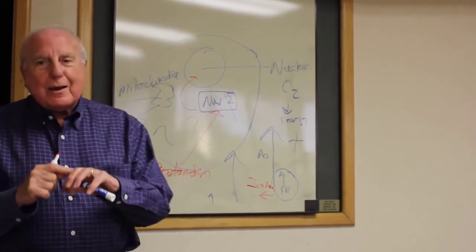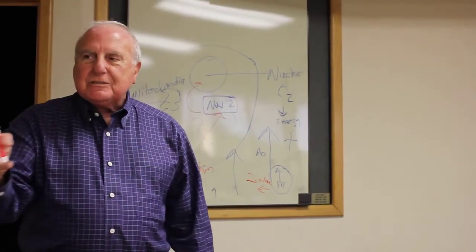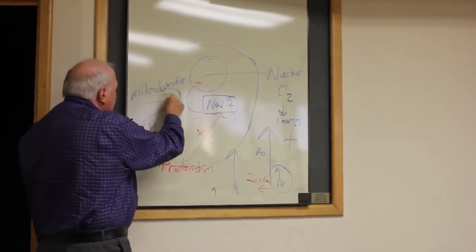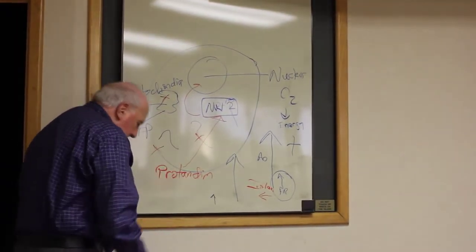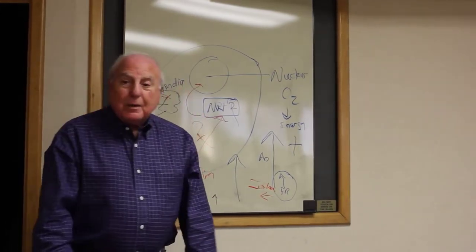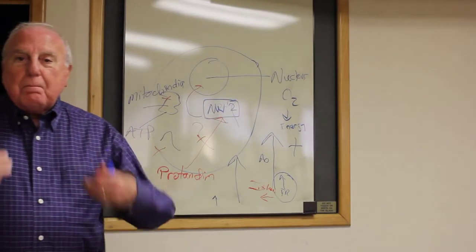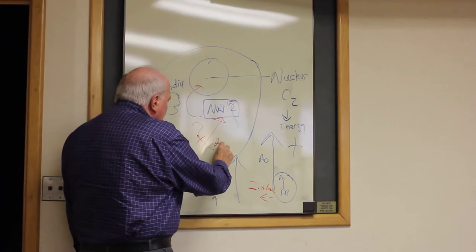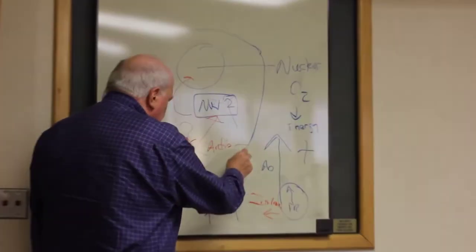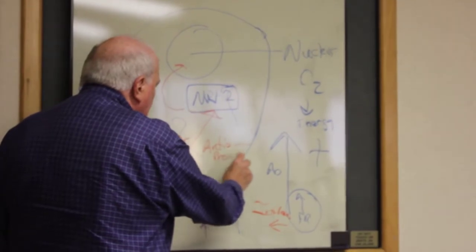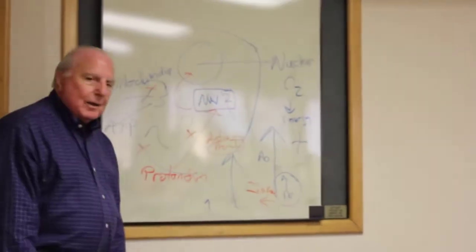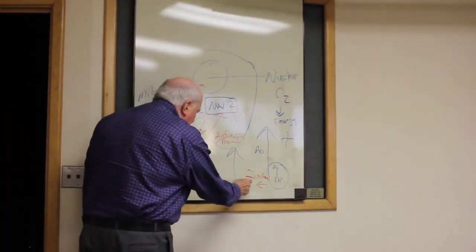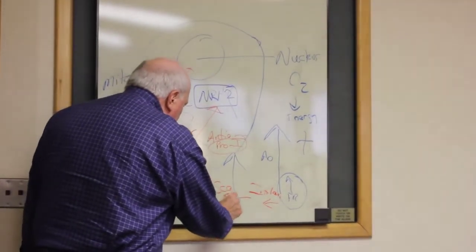Why? Because that free radical when it doesn't get neutralized attaches any place it wants to. It can attach to one of the engines here. It can attach to the mitochondria. It can attach to the cell membrane. It can attach any place and when it does it injures the cell. The body responds by making more anti free radicals which are called pro-inflammatory, I'll just make an eye here, pro-inflammatory molecules. And that always ends up in what? A scar.